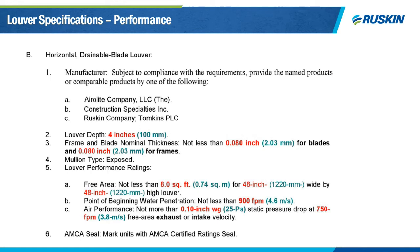Here we have an example of a spec that's not written around a specific model. Rather than using performance unique to a particular model, it uses rounded number values based on the actual requirements of the job. These numbers are easier to review and easier to type into software to compare to other models. Note that the pressure drop is 0.1 inches at 750 feet per minute free area velocity — most likely what the actual design airflow is for the job. This spec is no less demanding performance-wise than the previous spec, but it's laid out in a way that's easier to analyze and less daunting for those who are bidding the job. If you're typically using guide specs specific to models, this type of spec requires additional legwork up front but could result in a more competitive bid and reduce your overall costs.